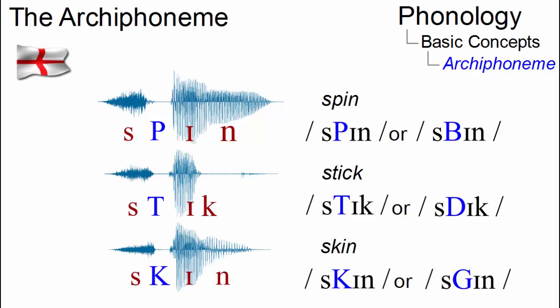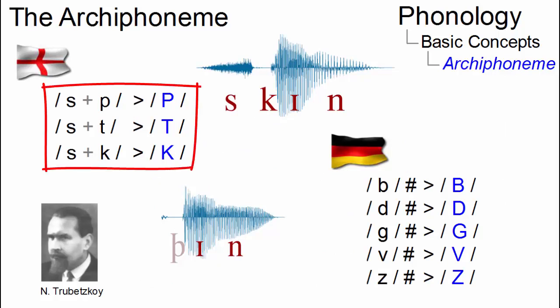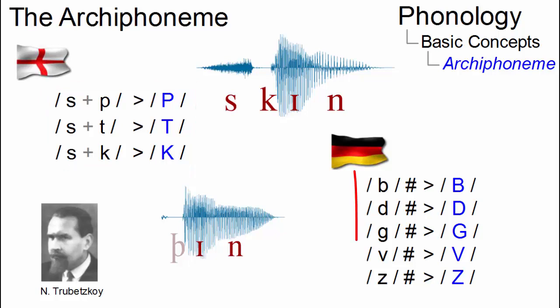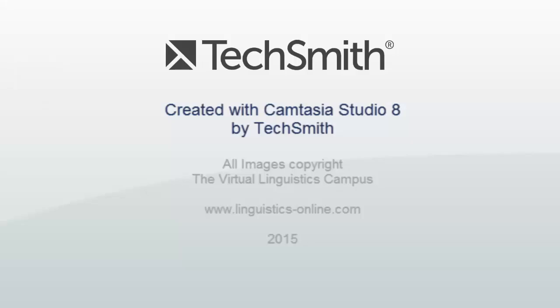Archiphonemes are reasonable elements to represent two phonemes that differ in one feature — for example, in voicing, as in the spin, stick, and skin examples, or in the German phenomenon of final devoicing. So archiphonemes can be integrated in a certain interpretation. Thank you.